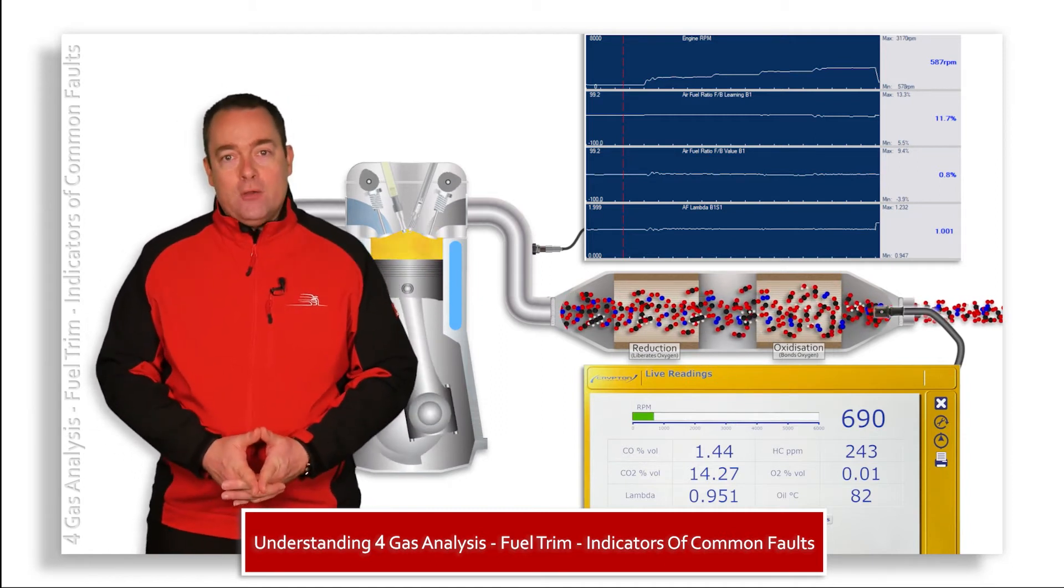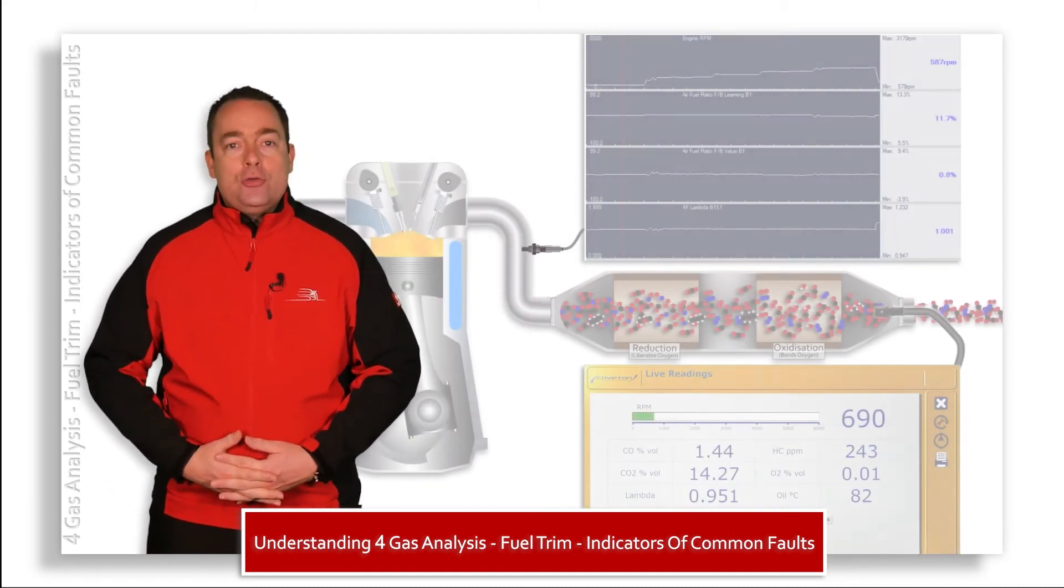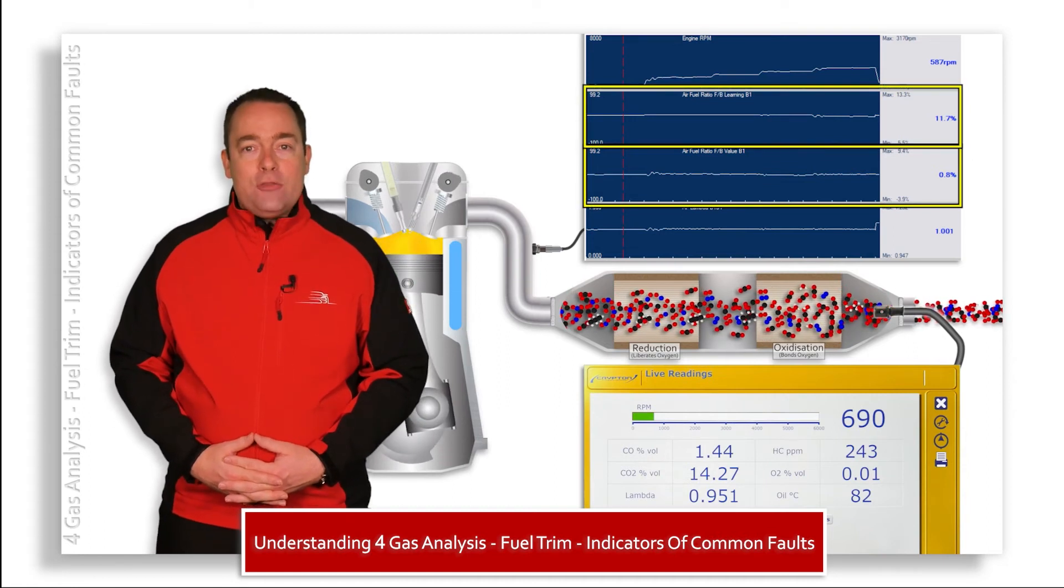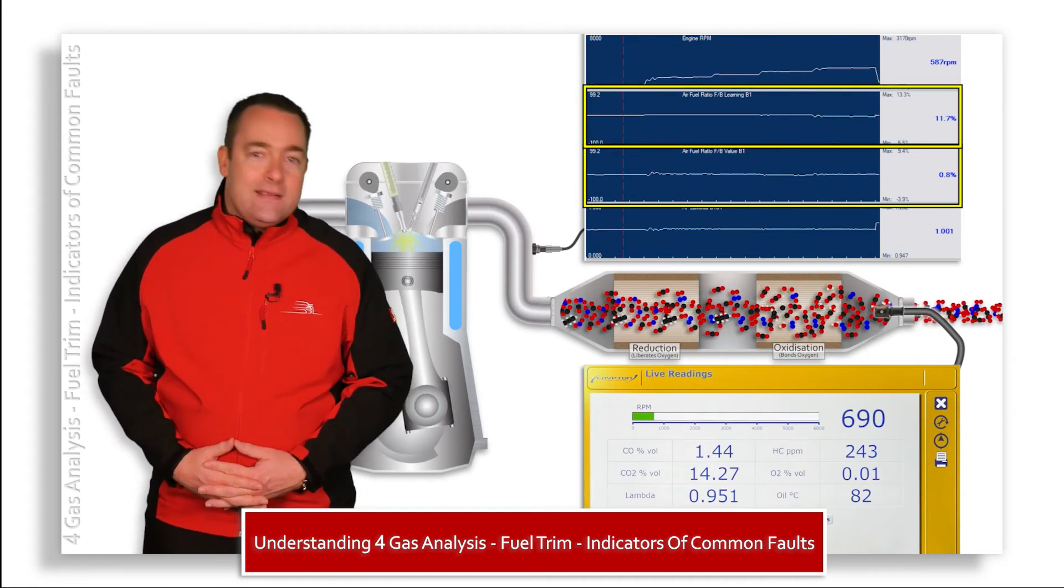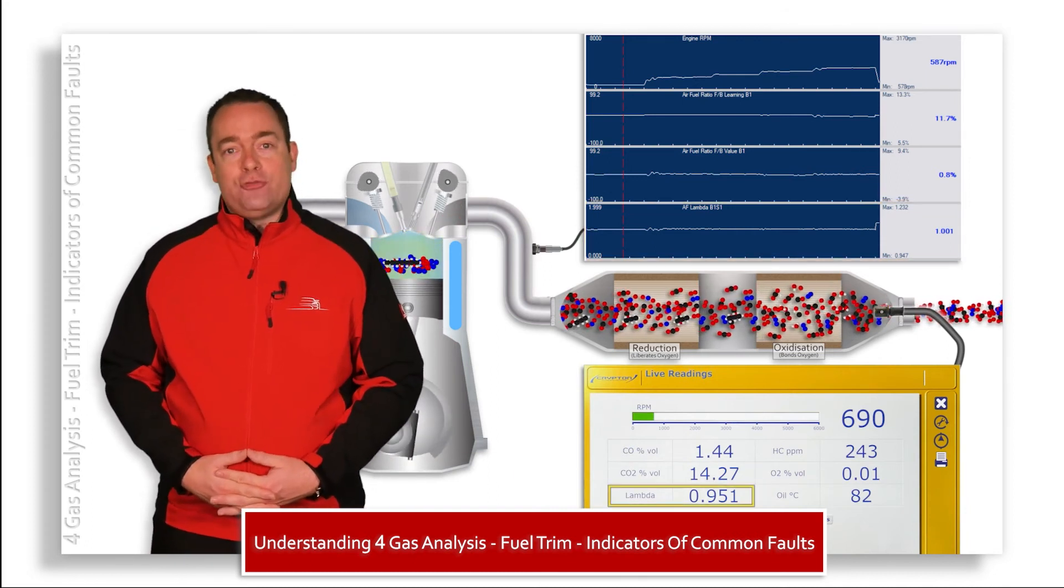You see, if the fault was caused by a faulty oxygen sensor, it could cause the ECM to add or remove fuel from the mix to produce what it thinks is lambda one, but it is in fact producing a rich or lean mixture.